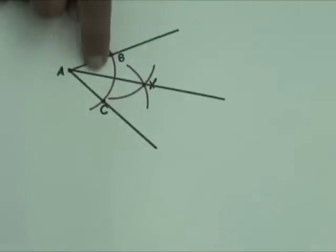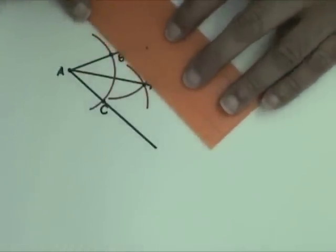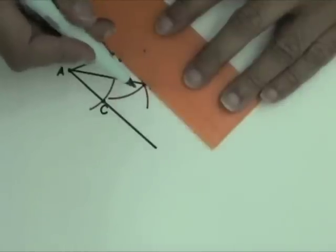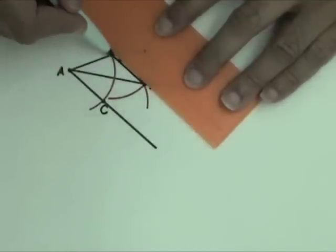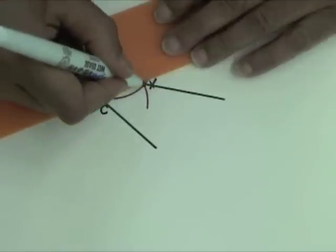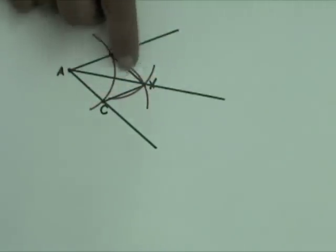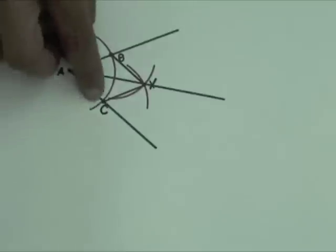Hence, angles BAX and CAX are equal in measure. To understand why, draw BX and CX to form triangles ABX and ACX.